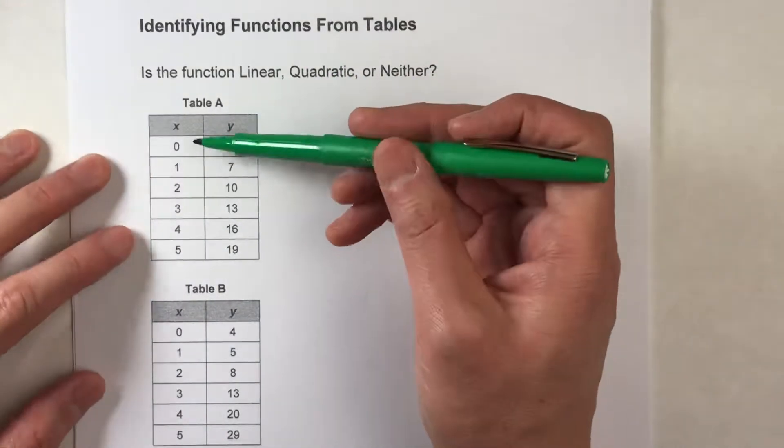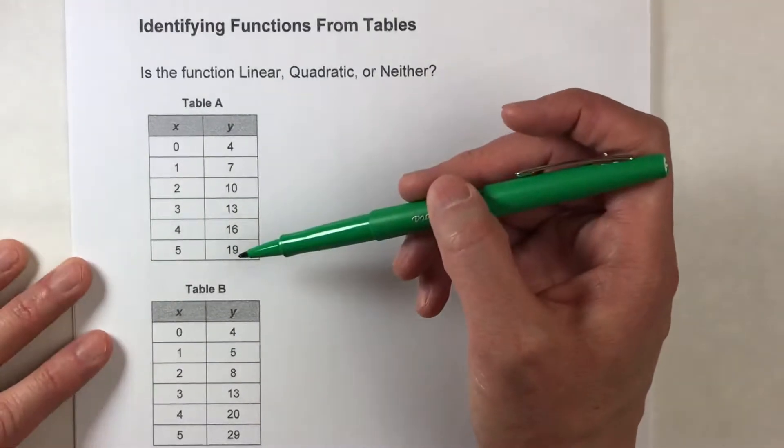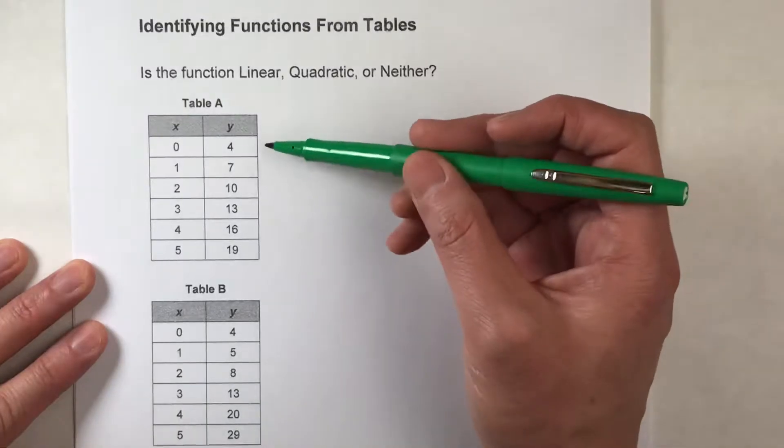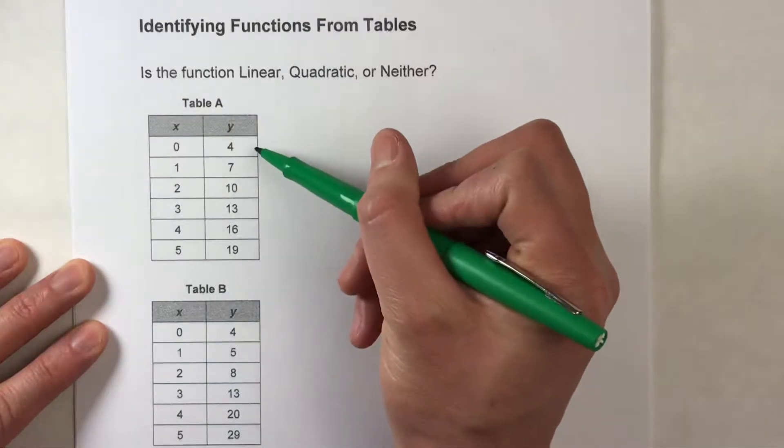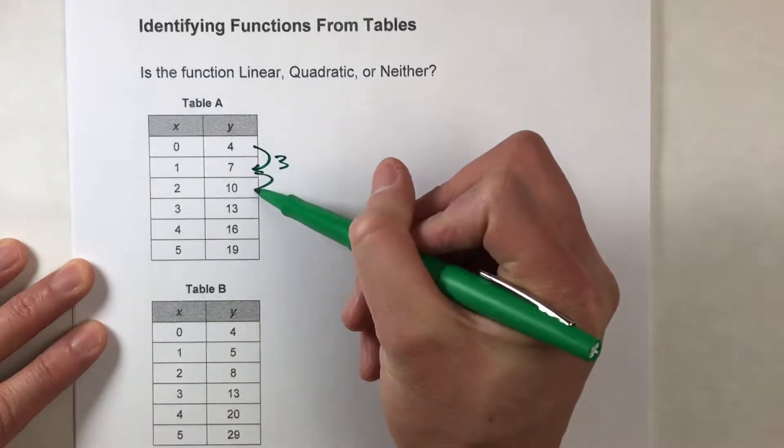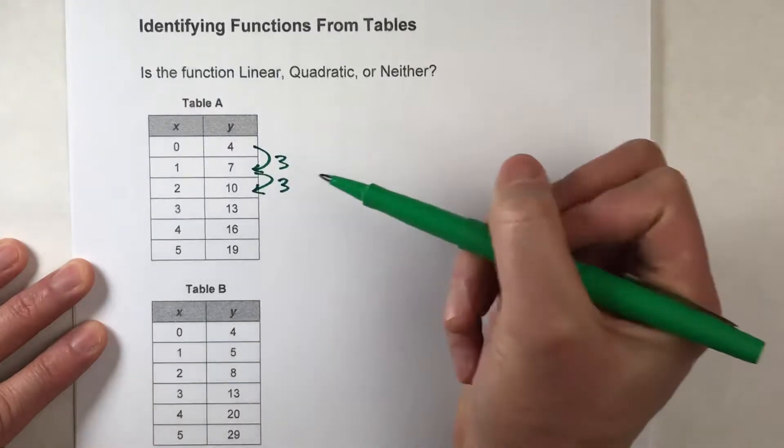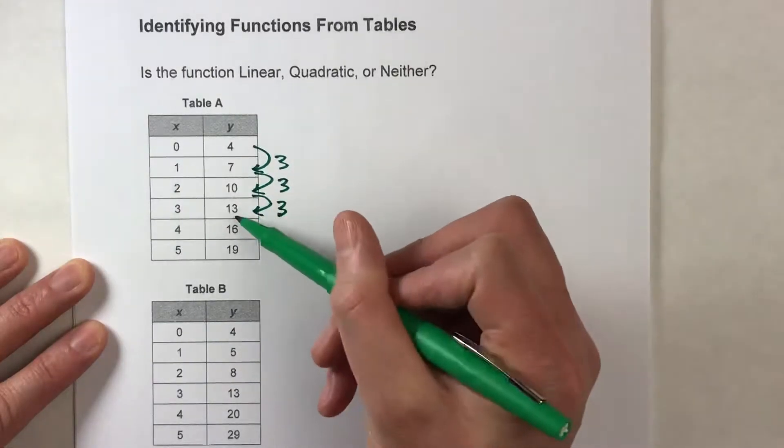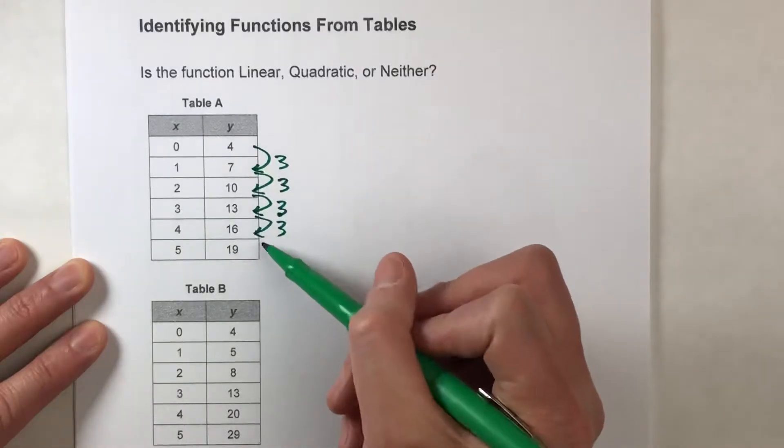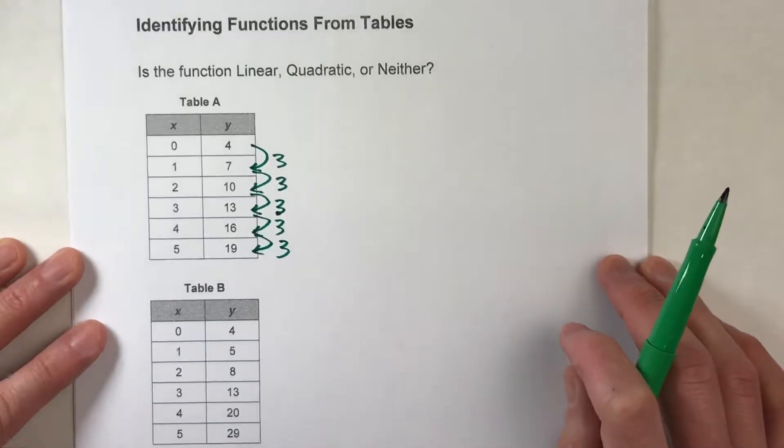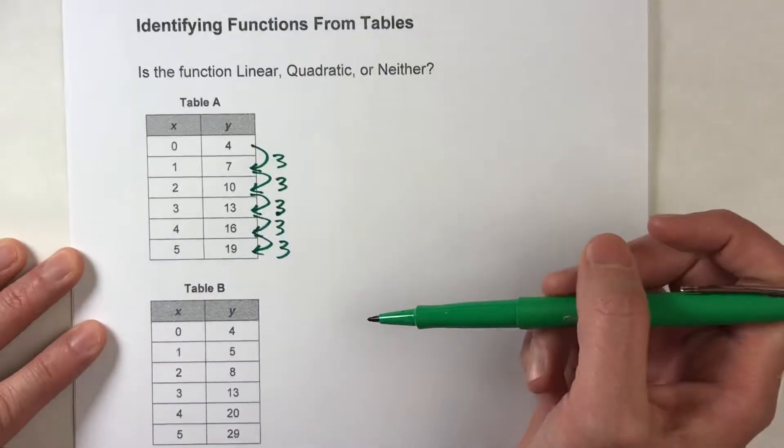We've got table A here, we've got x values from 0 to 5, and then we've got different y values. Now the first thing you're going to do is figure out how is y changing? So notice, from here to here it's going up 3, then here to here it's going up 3, then from here to here it's going up 3, 13 to 16 it goes up 3, 16 to 19 it's going up. So it's adding 3 every single time from each row.